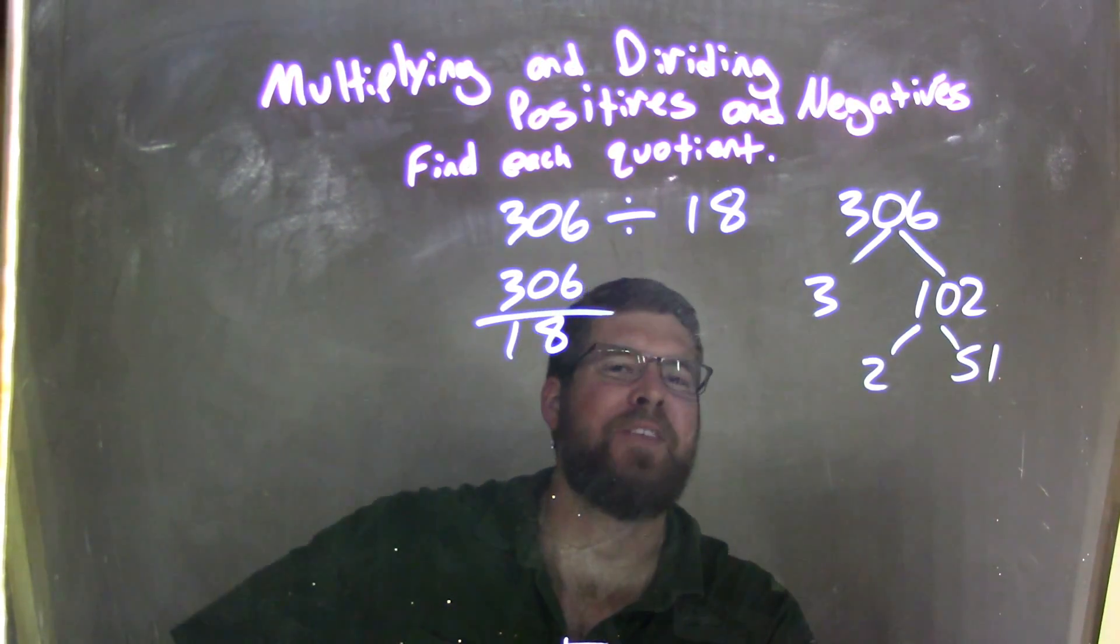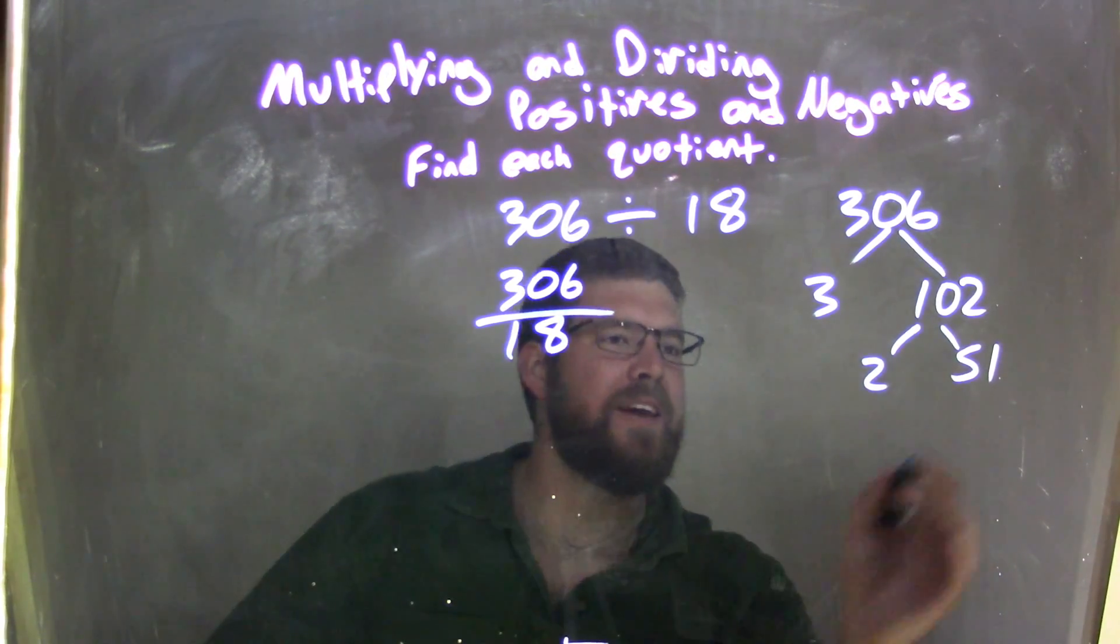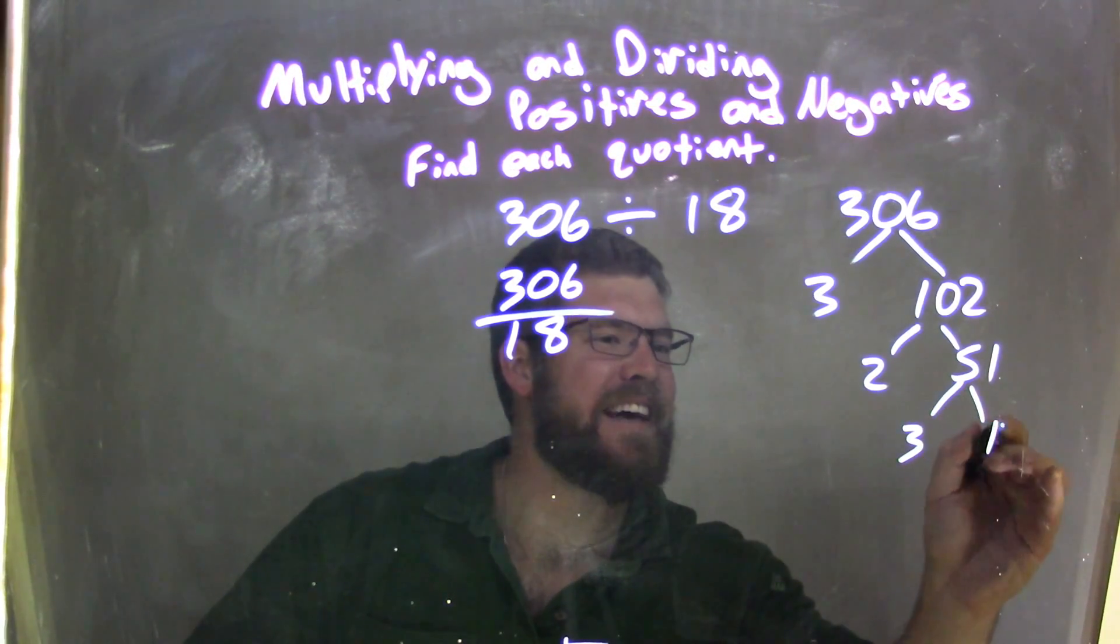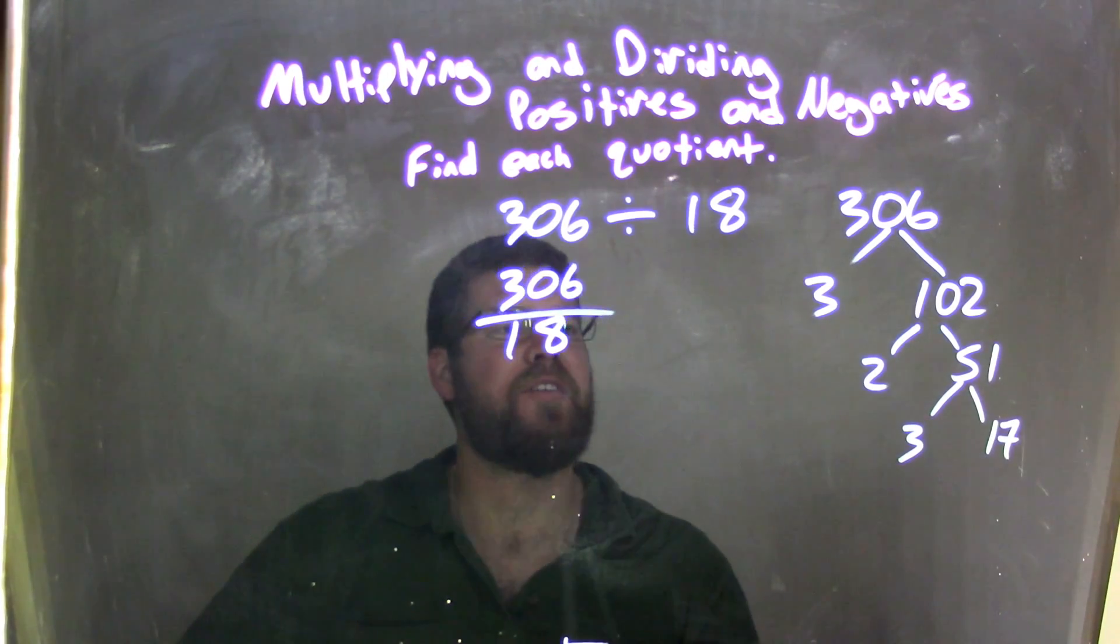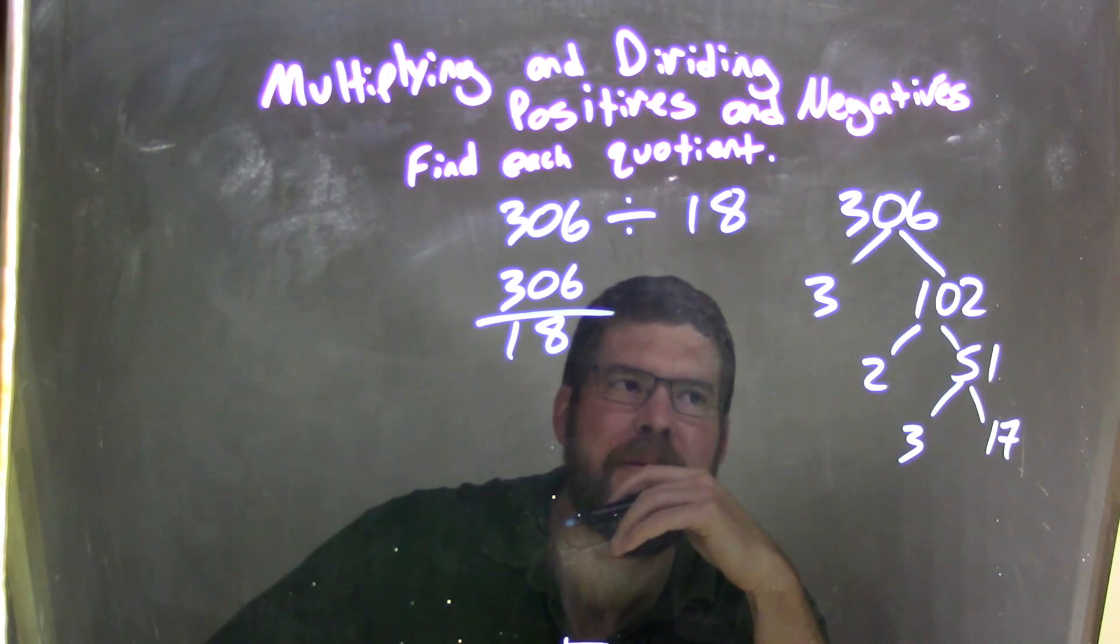3 goes into 51 17 times. So, now we have 3 times 2 times 3 times 17. Okay. So, how can we, what can we get here?